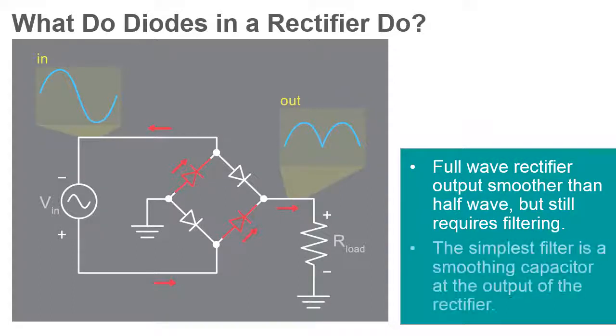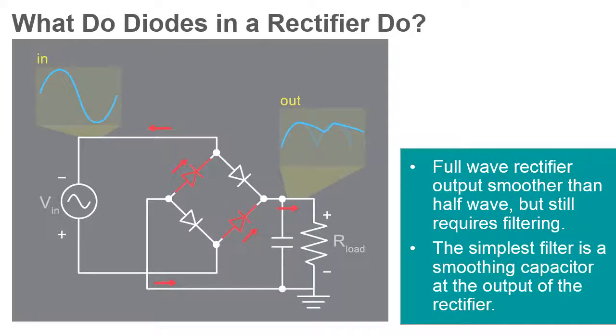The simplest form of filtering is a reservoir capacitor or a smoothing capacitor placed at the DC output of the rectifier.